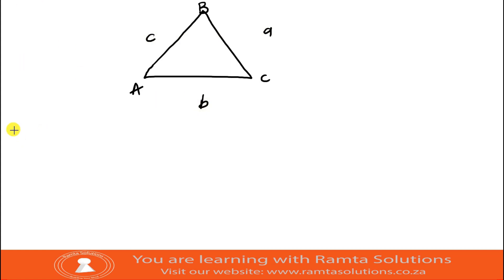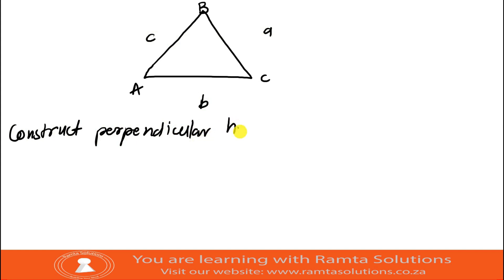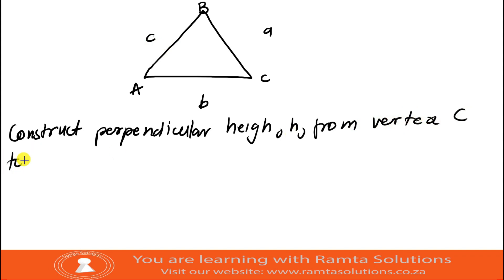This time, construct perpendicular height H from vertex C to line AB. Here it is — a perpendicular height, which I'll call H. I'll also call the foot of the perpendicular point D.